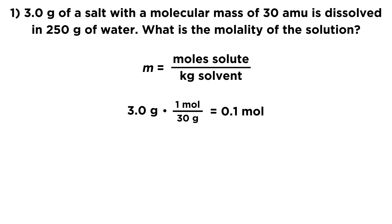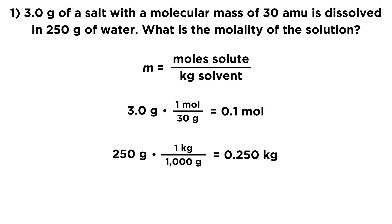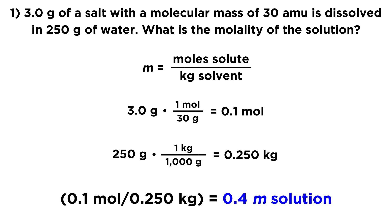Now we need our kilograms of solvent. We take 250 grams and multiply by 1 kilogram over 1,000 grams, so grams cancel, giving us 0.250 kilograms. Placing moles solute on top and kilograms solvent on the bottom: 0.1 moles over 0.25 kilograms gives us a 0.4 molal solution. Pretty straightforward — just plugging into the definition of molality.